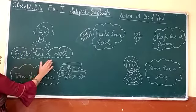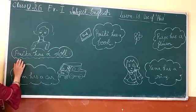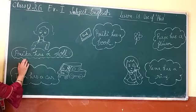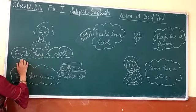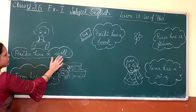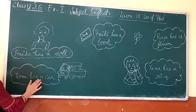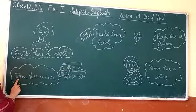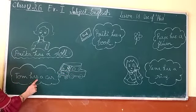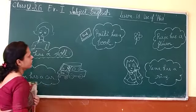Anita has a dog. Anita is a singular person, so we will use 'has'. Anita has a dog. Now Tom has a dog. Tom is singular number, so we will use 'has'. Tom has a dog.